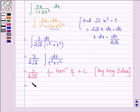Now let us put the value of t. So we have 3 upon 2 root 2 tan inverse root 2 x square plus c.